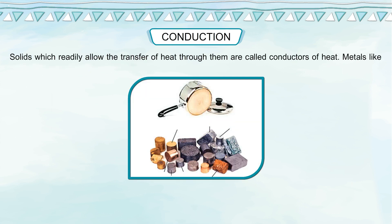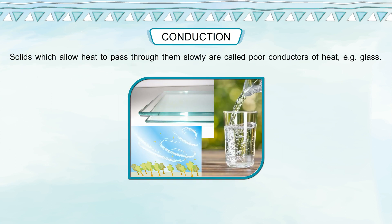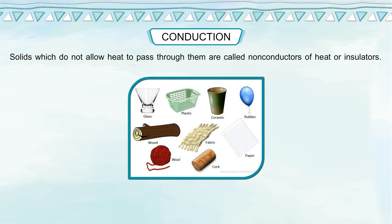Solids which readily allow the transfer of heat through them are called conductors of heat. Metals like gold, silver, iron, and aluminium are conductors of heat. Solids which allow heat to pass through them slowly are called poor conductors of heat — example: glass. Apart from solids, air and water are also poor conductors of heat. Solids which do not allow heat to pass through them are called non-conductors of heat — examples: wood, paper, bakelite, asbestos, clay.